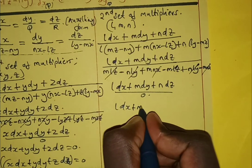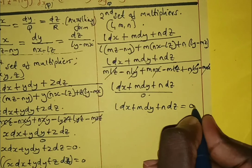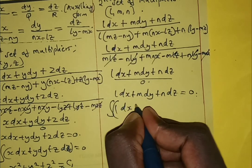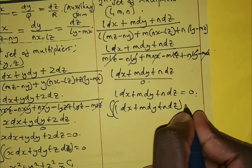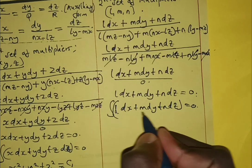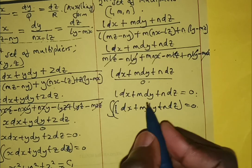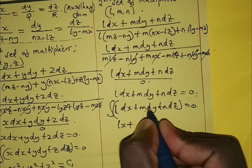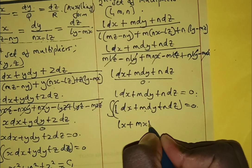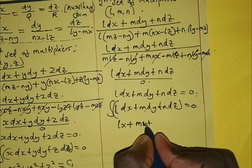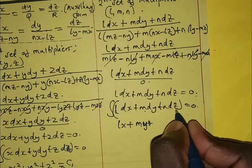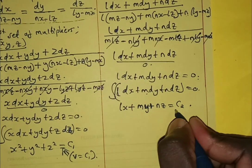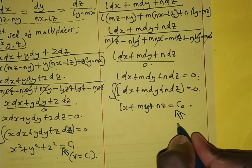Therefore l dx plus m dy plus n dz equals zero. We integrate this equation. Since l, m, and n are constants, integrating gives us lx plus my plus nz equals c₂. This is our second solution, which we call u equals c₂.